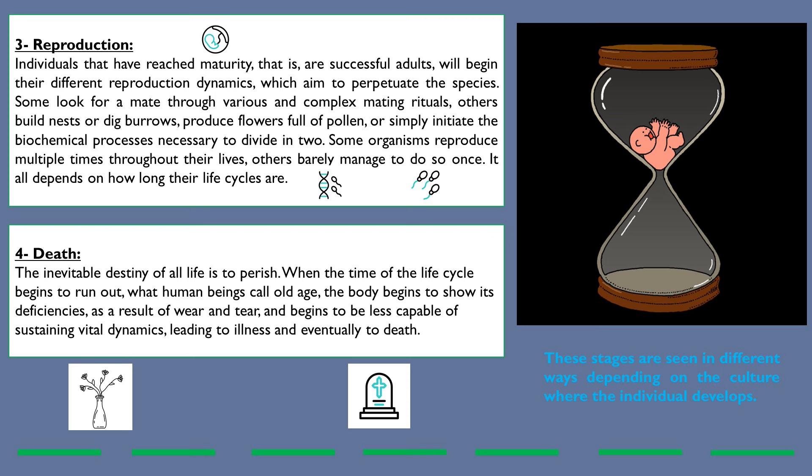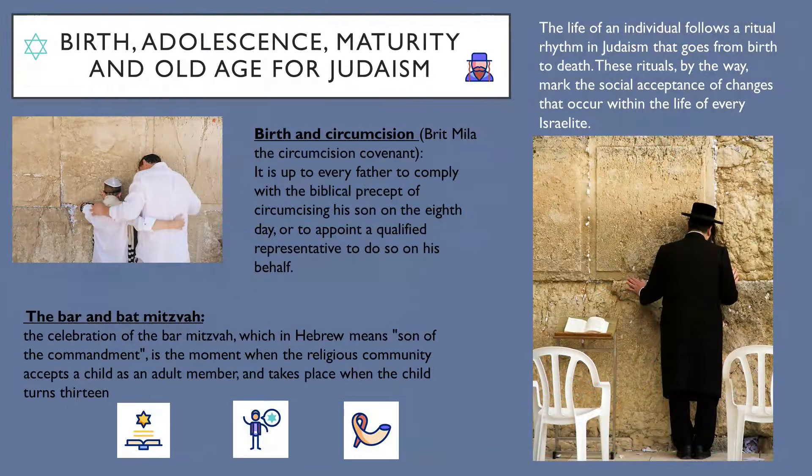Death. The inevitable destiny of all life is to perish. When the time of the life cycle begins to run out — what human beings call old age — the body begins to show its deficiencies as a result of wear and tear, and begins to be less capable of sustaining vital dynamics, leading to illness and eventually to death. These stages are seen in different ways depending on the culture where the individual develops.